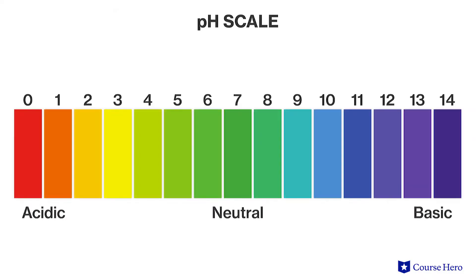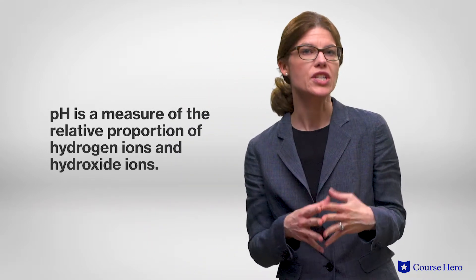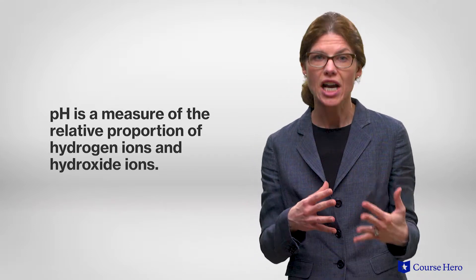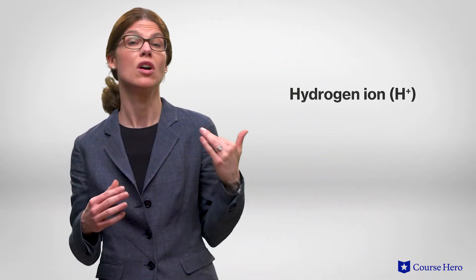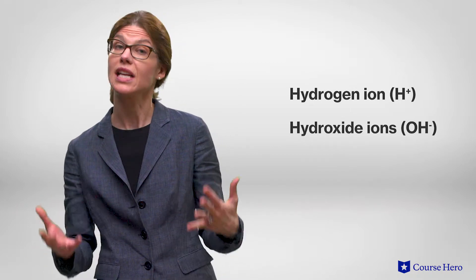pH regulation is essential for life, as most living things require an internal pH at or near neutral pH, or pH 7, in order to survive. This is because many cellular processes can be disrupted if the pH balance varies even slightly. A neutral pH is achieved when there are equal quantities of hydrogen ions and hydroxide ions in the solution.